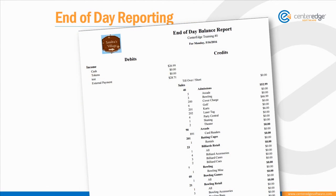You'll find all of the day's external payment income on your end-of-day balance report. The amount on the report should equal the amount you took in using your standalone processor.